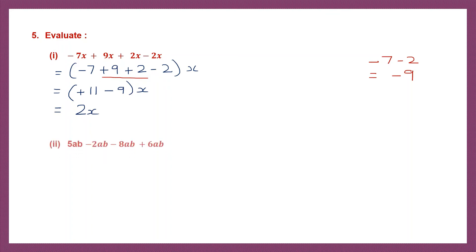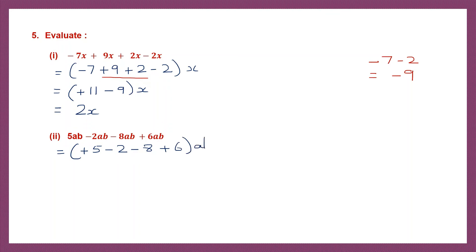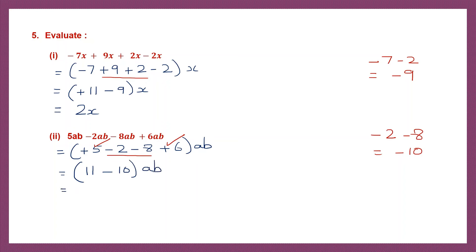Next: 5ab minus 2ab minus 8ab plus 6ab. Again we have like terms: plus 5, minus 2, minus 8, plus 6ab. Take the numbers with the plus sign first — plus 5 and plus 6: 5 plus 6 is 11. Now work out minus 2 minus 8 — signs are the same, put the same sign and add: 2 plus 8 is 10, so minus 10ab. So 11 minus 10 is 1. The answer is 1ab, or simply ab.